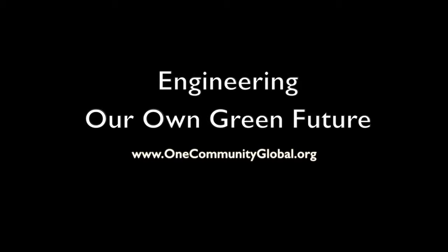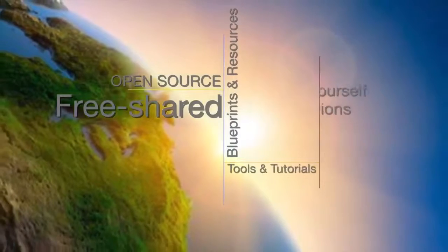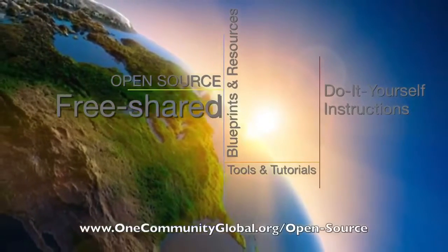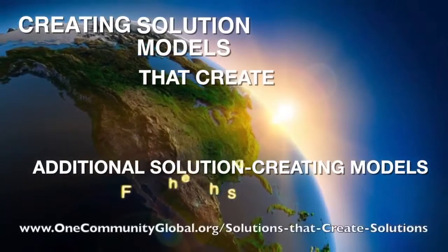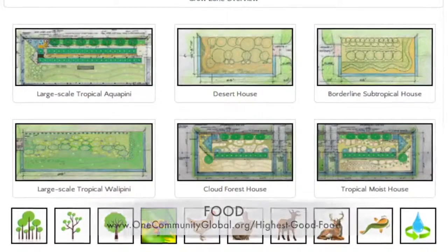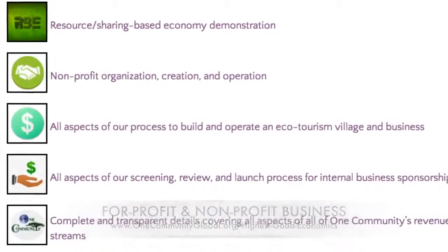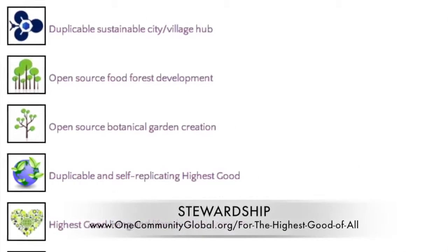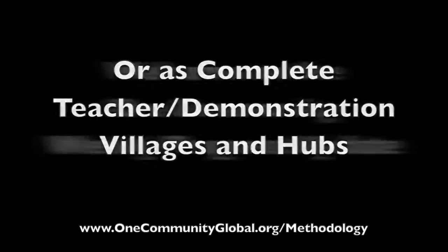Engineering our own green future — One Community weekly progress update number 116. One Community is a 501c3 nonprofit organization creating open source and free shared blueprints, resources, tools, tutorials, and do-it-yourself instructions for highest good living, creating solution models that create additional solution-creating models in the service of all life on this planet. This includes highest good approaches to food, energy, housing, education, for-profit and nonprofit business creation, society, and true earth stewardship — all implementable as individual components or as complete teacher demonstration villages and hubs.